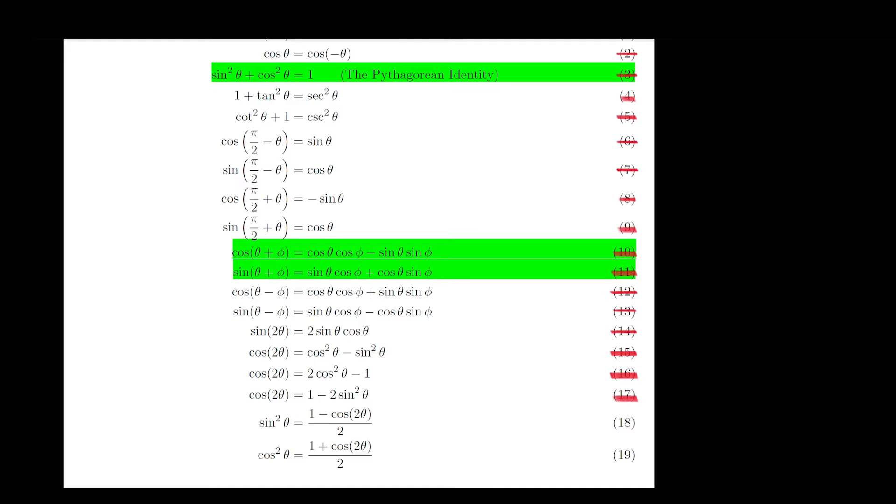So we have proven 17 out of the 19 on this list, and all that remains to prove are the final two trigonometric identities, trigonometric identities 18 and 19.